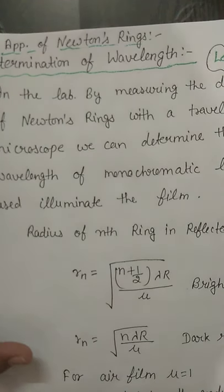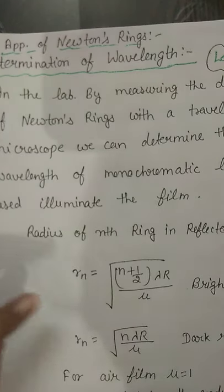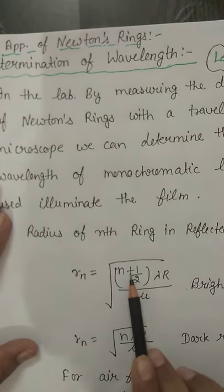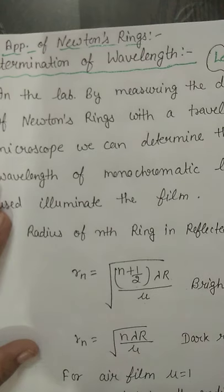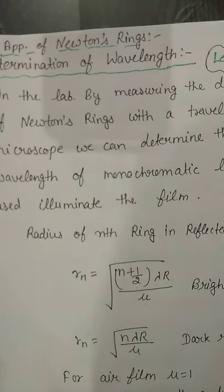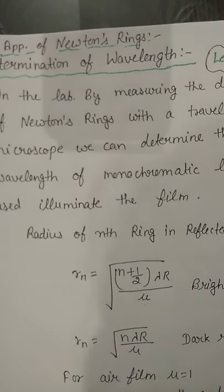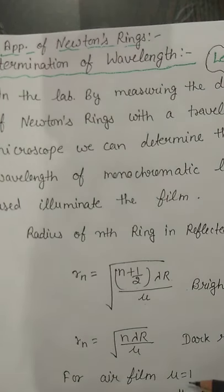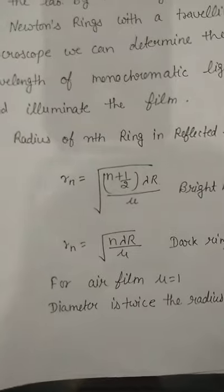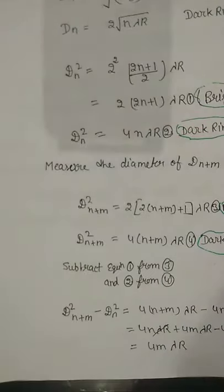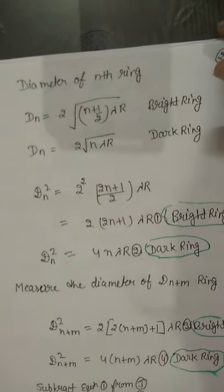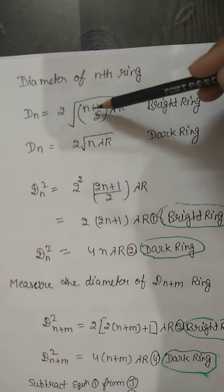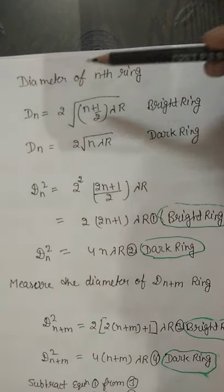In the reflected system we have bright and dark rings. The radius of the bright ring is given by r_n = sqrt((n + 1/2) × lambda × R / mu), and the radius of the dark ring is r_n = sqrt(n × lambda × R / mu). For an air film between the plano-convex lens and glass plate, mu equals 1. The diameter is twice the radius, so the diameter of the bright ring D_n = 2 × sqrt((n + 1/2) × lambda × R).